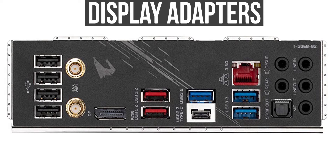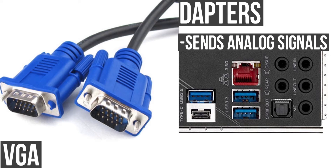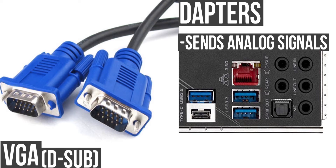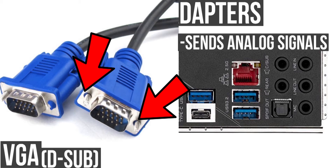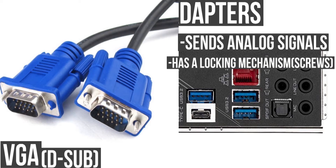A standard is VGA. So let me tell you about this — the analog connector. You can call it a D-sub connector. You can see this with a blue color plug. You can call it a blue color connector, and it has pins. You can call it a screw — that's why VGA is also called D-sub. It has a locking mechanism with two screws, so if you screw it up, that is the mechanism.